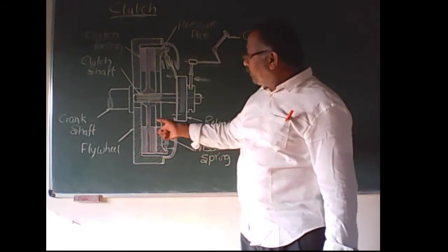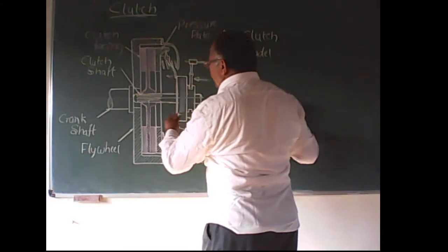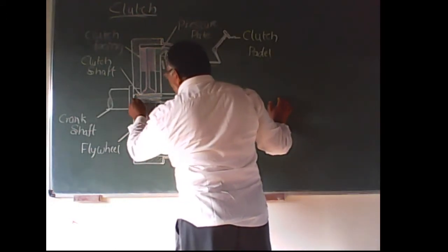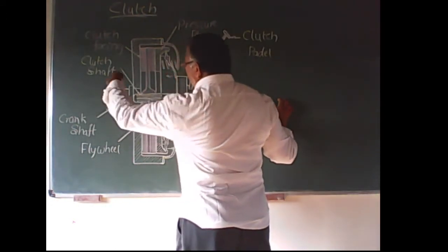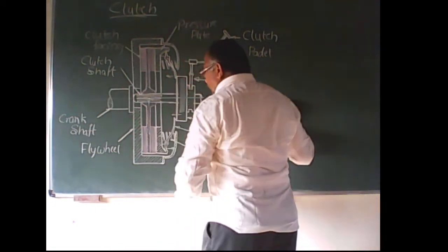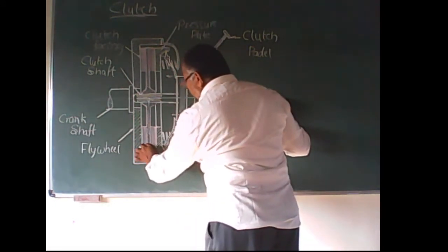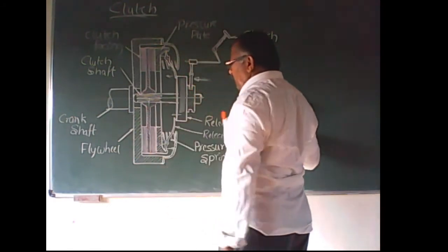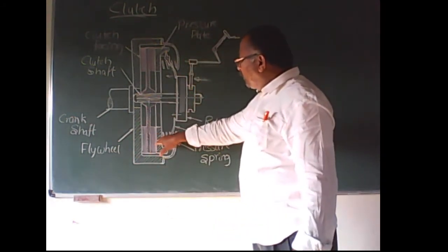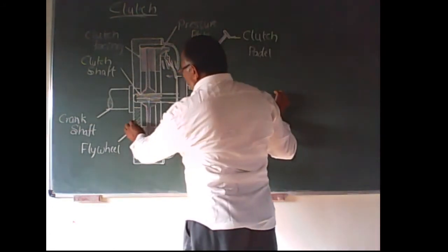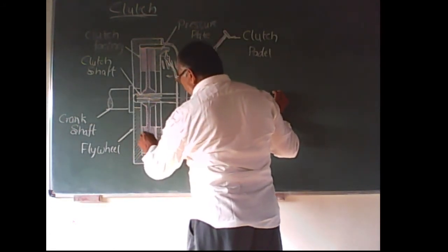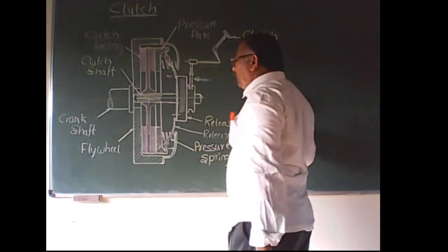The clutch plate is free from the pressure plate and the flywheel. The linings are free from both the flywheel and the pressure plate, so there is no drive transmission from the flywheel or pressure plate to the clutch plate. The clutch is now in the disengaged position.